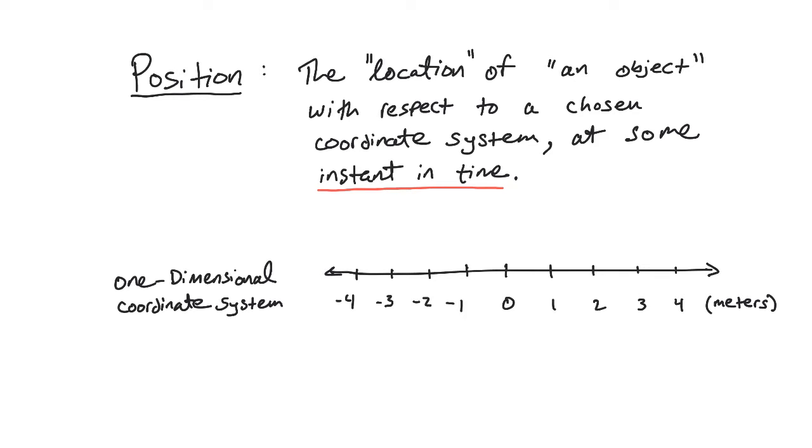Position is a simple idea, but there's a couple things to really think about. It's the location of an object with respect to a chosen coordinate system at some instant in time. So it's where an object is located.